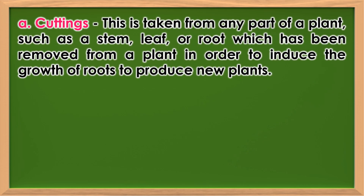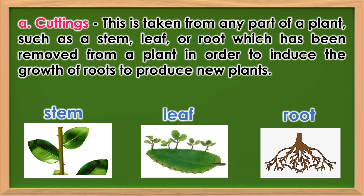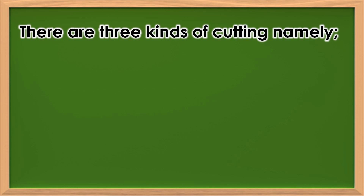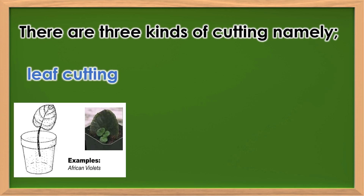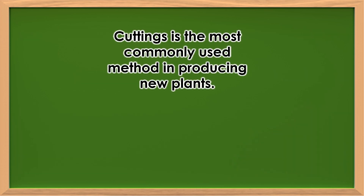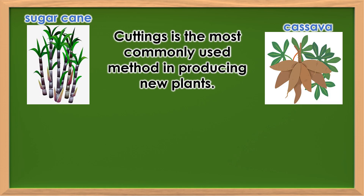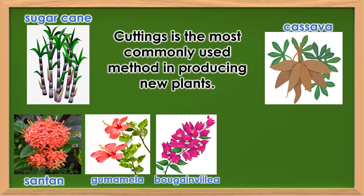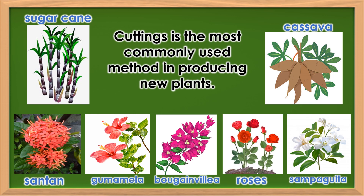Cuttings: This is taken from any part of a plant — such as a stem, leaf, or root — which has been removed from a plant in order to induce the growth of roots to produce new plants. There are three kinds of cuttings: leaf cutting, stem cutting, and root cutting. It is the most commonly used method in producing new plants. Examples are sugarcane, cassava, santan, gumamela, bougainvillea, roses, and sampaguita.